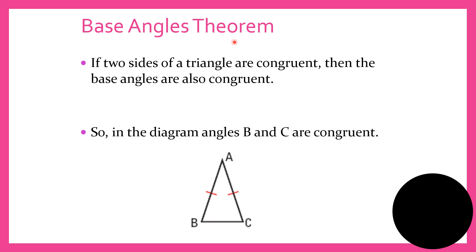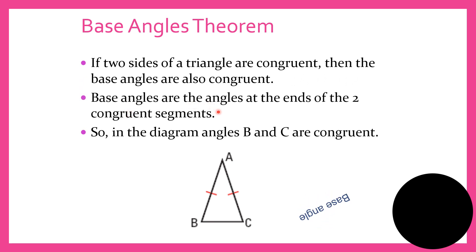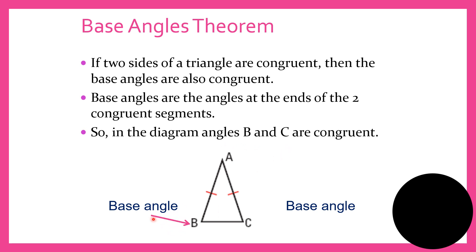The base angles theorem states: if two sides of a triangle are congruent, then the base angles are also congruent. Base angles are the angles at the ends of the two congruent segments. So in the diagram, angles B and C are congruent — those are the base angles.